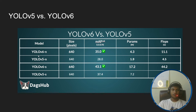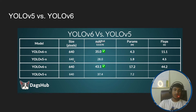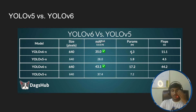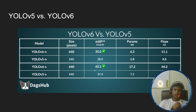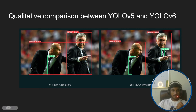Comparing YOLOv5 versus YOLOv6: YOLOv6-N has an input size of 640 pixels, 35 mAP, and 4.3 million parameters. YOLOv5-N has the same pixel size but a lower mAP with only 1.9 million parameters. YOLOv6-S achieves 43.1 mAP with 17.2 million parameters, while YOLOv5-S achieves 37.4 mAP with 7.2 million parameters.